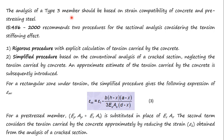The analysis of type 3 members should be based on strain compatibility of concrete and pre-stressing steel. IS 456-2000 recommends two procedures for sectional analysis considering the tension stiffening effect. We use the simplified procedure based on conventional analysis of cracked sections, finding only the cracked width and initially neglecting the tension carried by concrete.